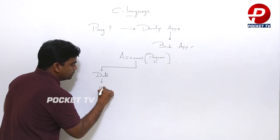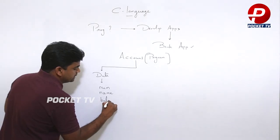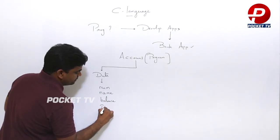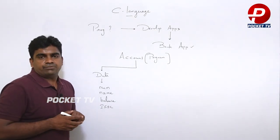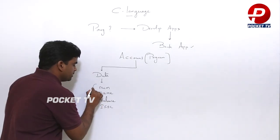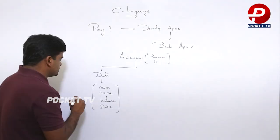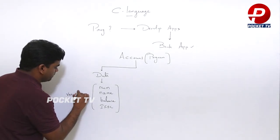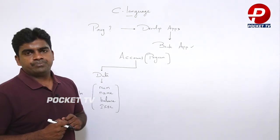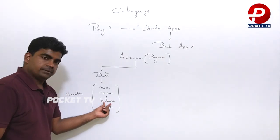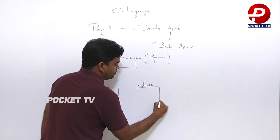Suppose I ask: tell me your account details. What are those details? Account number, account holder name, balance in account, IFSC code — these are all called details. We can store this information using the concept called variables.